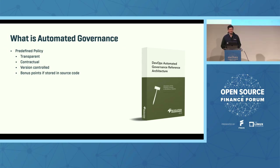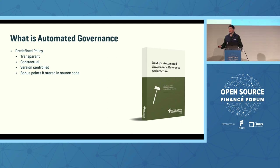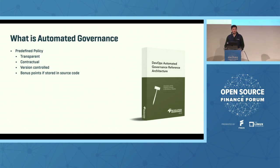When we talk about predefined policy, we're talking about transparent policy that's evident to the developer — they can see what's required of them and what they need to do to meet it. It's contractual, meaning that if you meet these policy requirements, you can go release the software. It's version-controlled, so its history can be shown retroactively. And you get bonus points if you store it in source code, depending on how you want to implement it.